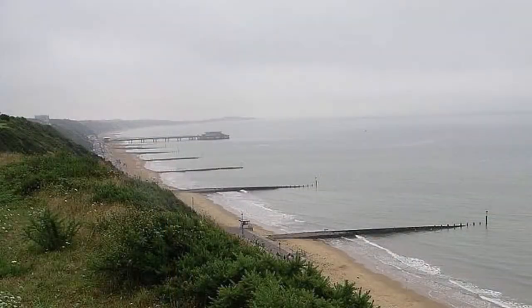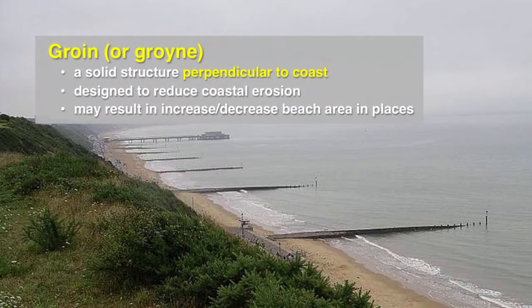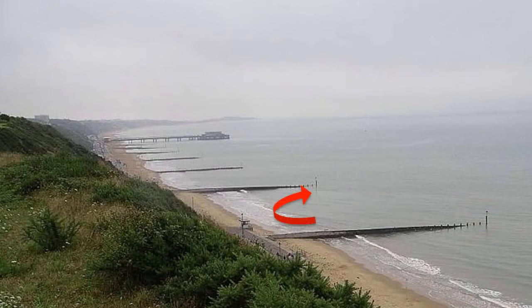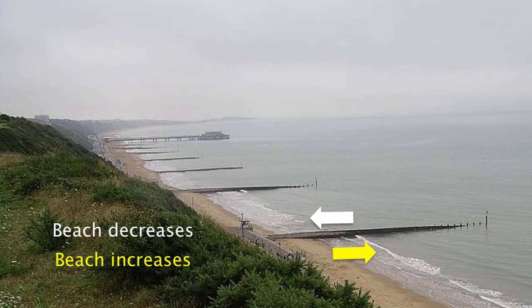First we have groins. A groin is a solid structure running perpendicular to the coast out into the ocean. Designed to reduce coastal erosion, it often results in an increase or decrease of beach area in some places. As the longshore current works its way around a groin toward the coast, it has enough velocity to dig into the coast and remove sand. As the current continues along the shoreline, it loses some of that speed and will tend to dump some of that sand at the foot of the next groin or barrier. So you can see how the beach will decrease or increase on either side of that groin.